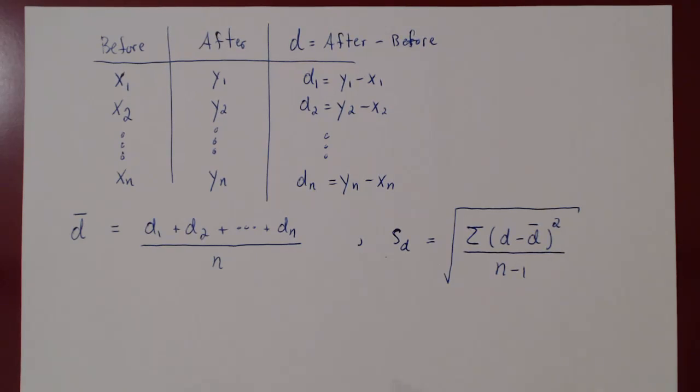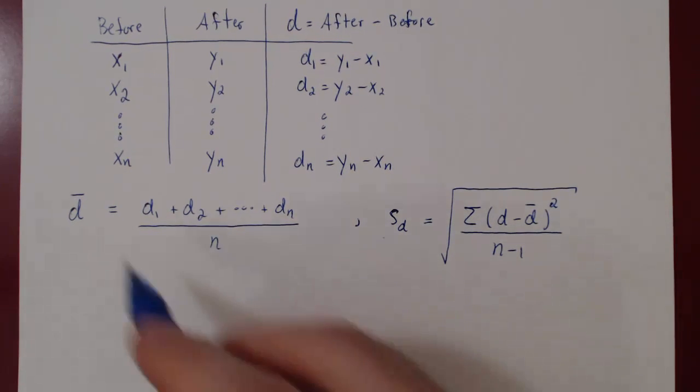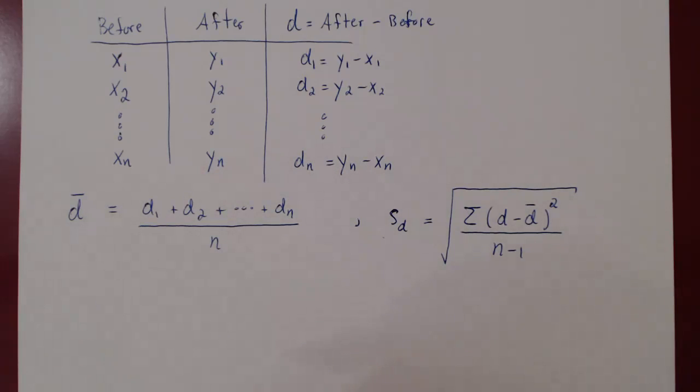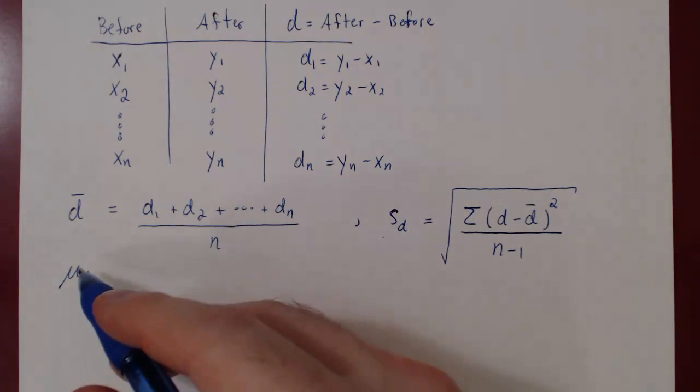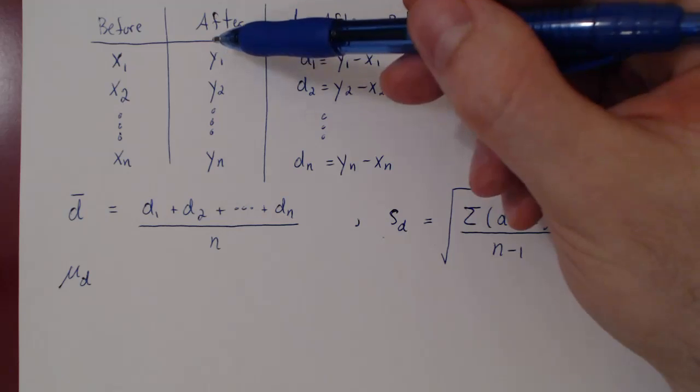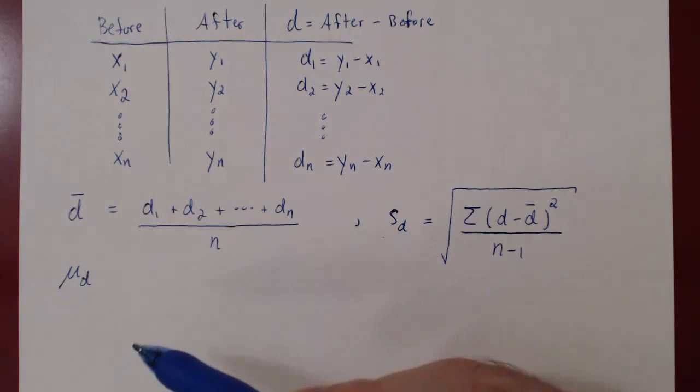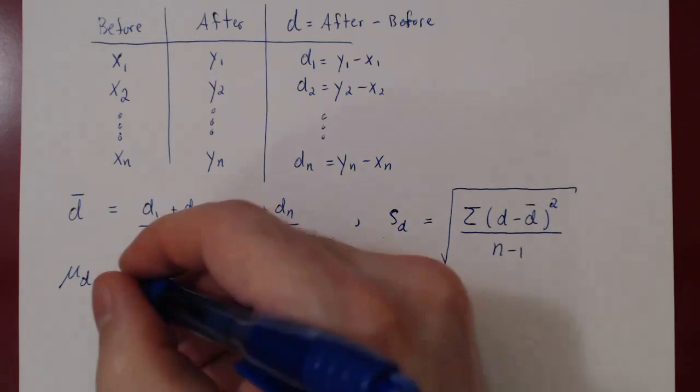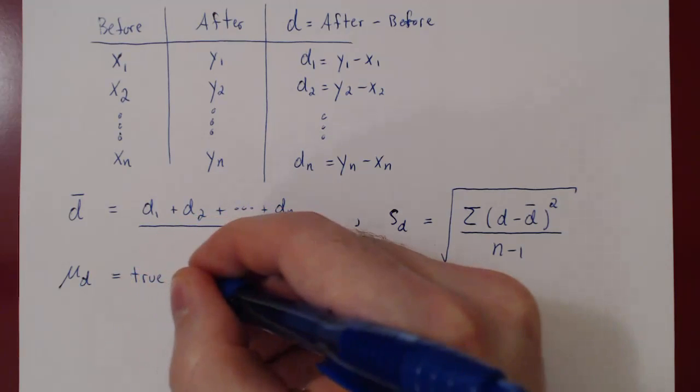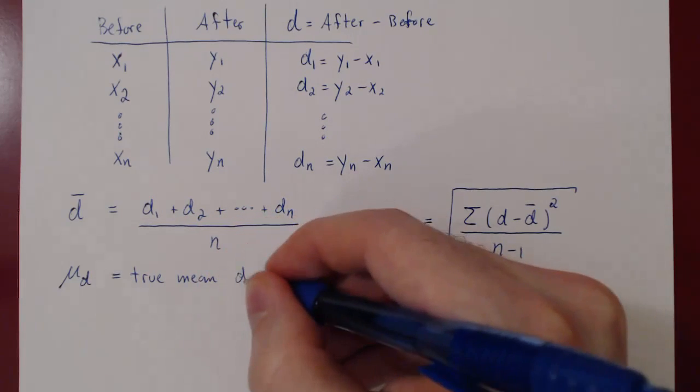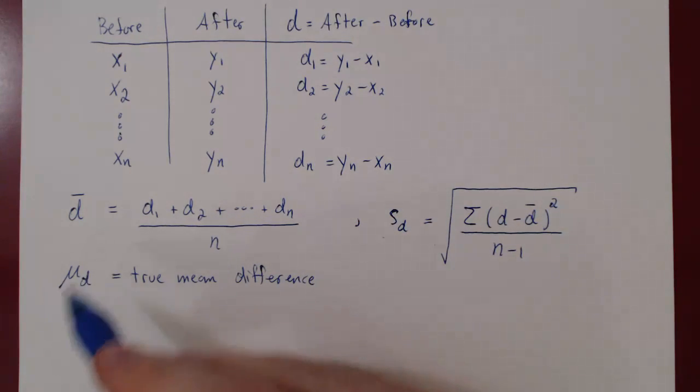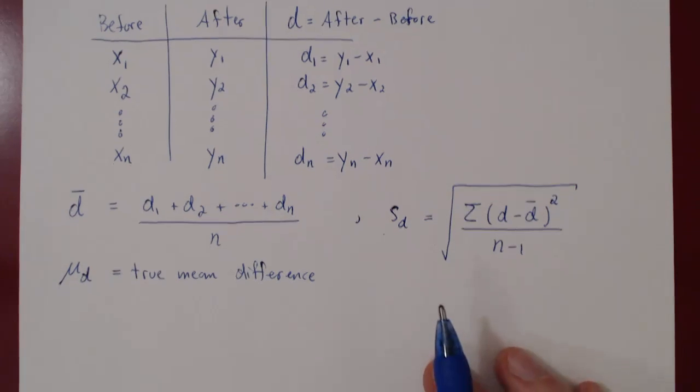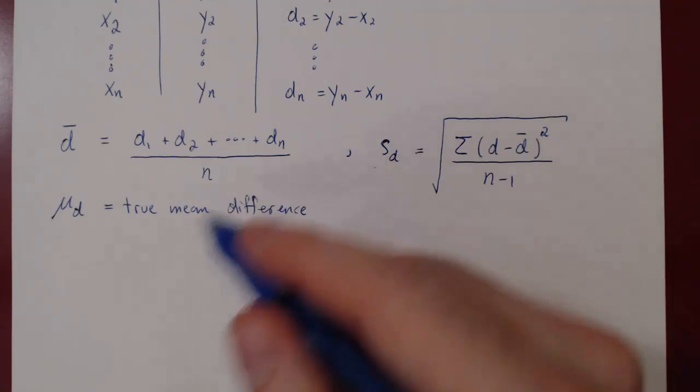In either case, we have a very well-known statistic. We take our sample mean difference, let me just use mu d. This will be the true mean difference, right? All we have is a sample of our population. If you were to sample the entire population, then you would get the true mean difference.